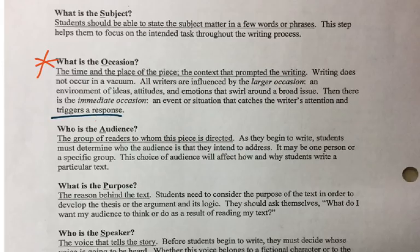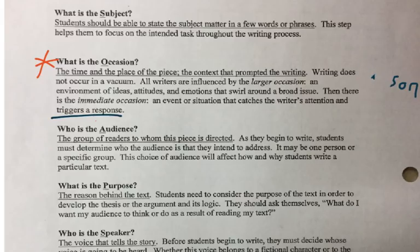Basically, something happened that made the writer trigger a response — maybe a horrible volcano happened, and that's going to be the occasion. That's what triggered the response for the writer to come up with this article. I would encourage you to write off to the side that it's the reason for the article — what prompted the writer to start writing about the subject.